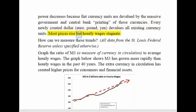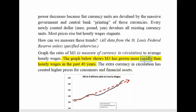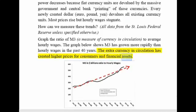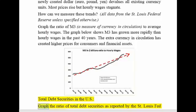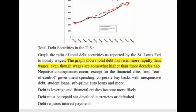Most prices rise but hourly wages stagnate. How can we measure these trends? All data from the St. Louis Federal Reserve unless specified otherwise. Graph the ratio of M3, a measure of currency in circulation, to average hourly wages. The graph below shows M3 has grown more rapidly than hourly wages in the past 40 years. The extra currency in circulation has created higher prices for consumers and financial assets. Graphing the ratio of total debt securities, as reported by the St. Louis Fed, to hourly wages shows total debt has risen more rapidly than wages, even though wages are somewhat higher than three decades ago.